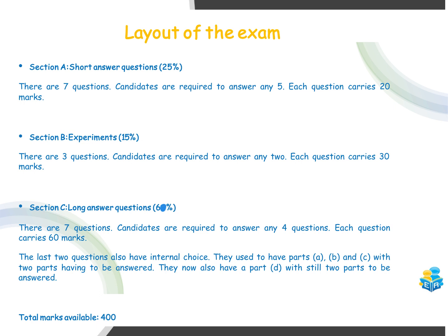Now Section A — there are seven questions within Section A. This used to be six, it's up to seven now. You're only required to answer any five; your best five are going to count. Each question carries 20 marks, giving a total of 100 marks or 25% of the final grade.